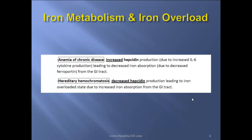In anemia of chronic disease, there is increased hepcidin production due to increased IL-6 cytokine from chronic disease, leading to decreased iron absorption due to decreased ferroportin from the GI tract. On the opposite side, in hereditary hemochromatosis, there is decreased hepcidin production leading to an iron overload state due to increased iron absorption from the GI tract.